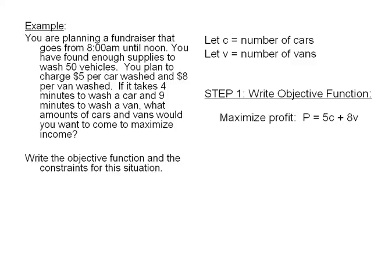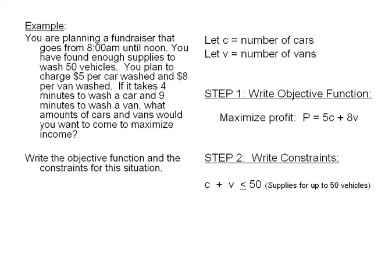But there are limits or restrictions on us as we try to maximize our profit. Those are called our constraints. So to write our constraints, we need to determine our limits or restrictions. The first limit is that we only have enough supplies to wash up to 50 vehicles. Therefore, C plus V needs to be less than or equal to 50 because the number of cars plus the number of vans needs to be less than or equal to 50.